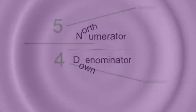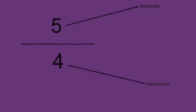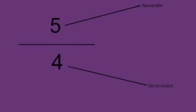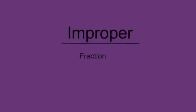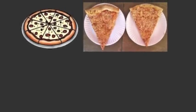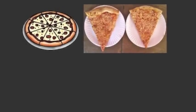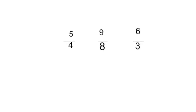When the numerator's larger than the denominator, when the top number's larger than the one below, it's an improper fraction — an improper fraction. The ratio has more pieces and parts than a whole. Five-fourths, nine-eighths, six-thirds — Improper!